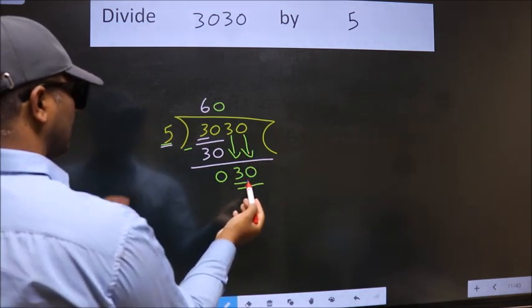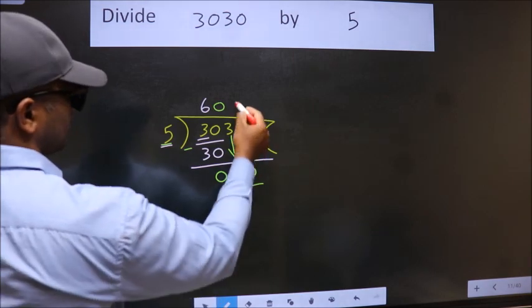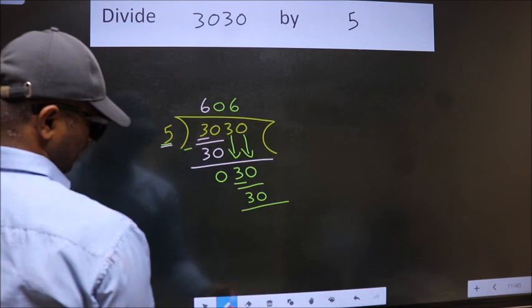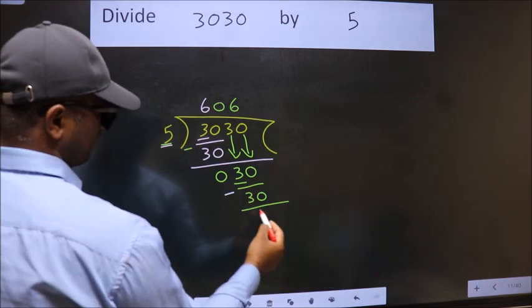When do we get 30? In 5 table. 5, 6, 30. Now, we subtract. We get 0.